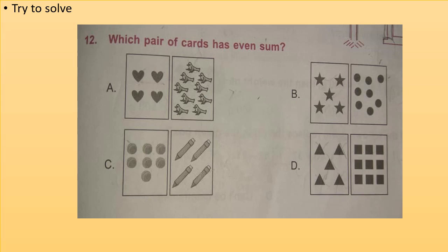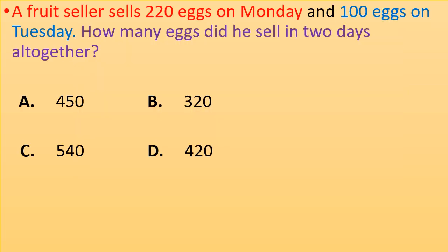Now we have to calculate the sum and choose which is even sum. A fruit seller sells 220 eggs on Monday and 100 eggs on Tuesday. How many eggs did he sell in two days altogether? Options are A, 450,